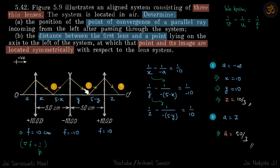We have three lenses. First we need to find the point of convergence of parallel ray. So basically if you have an object at infinity, where will be the final focus of the system?